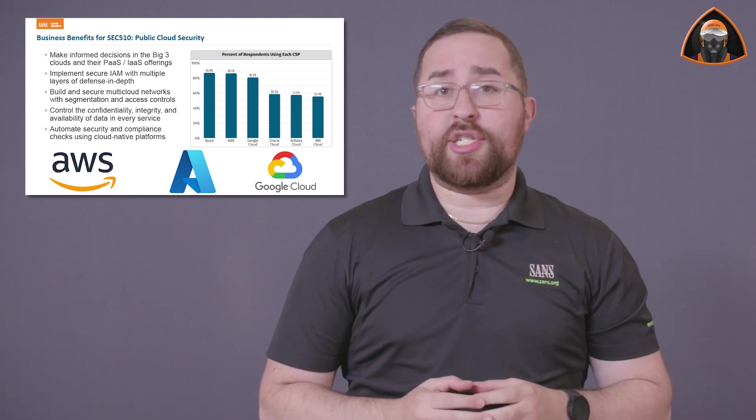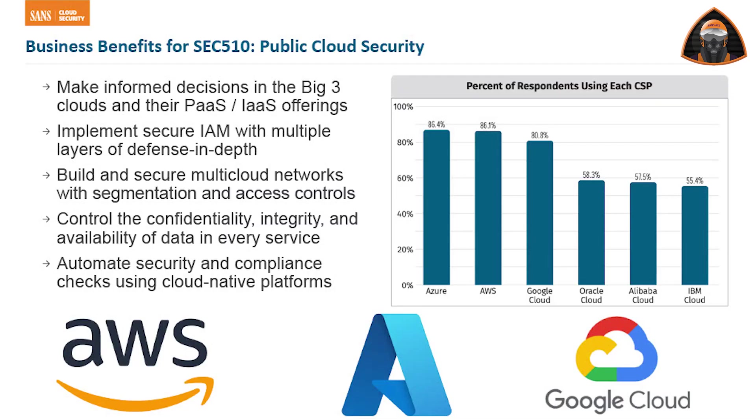And that's exactly why we wrote this course: SEC 510, Public Cloud Security — AWS, Azure, and GCP. Because multiple clouds require multiple solutions. We here at SANS surveyed many organizations and found that the vast majority of them use all three of the big three cloud providers. And that's why individuals who work across those three cloud providers would benefit greatly from SEC 510.